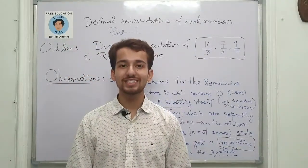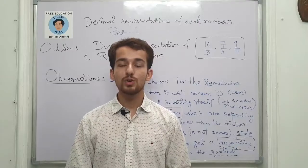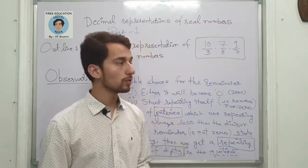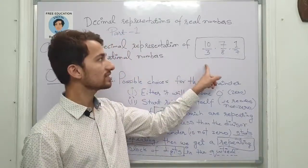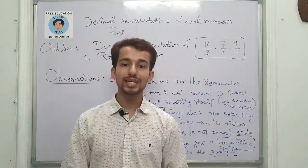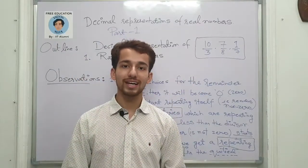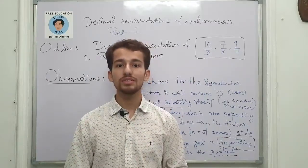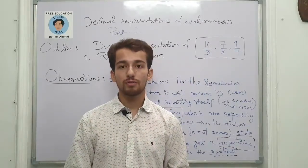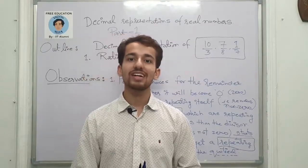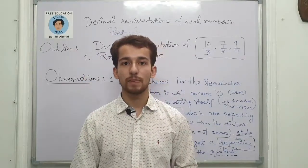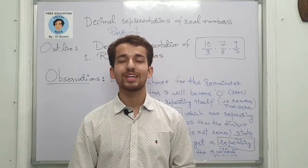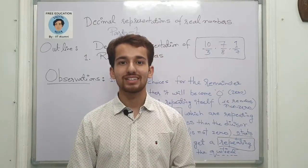This concludes the decimal representation of real numbers, part one. In the coming video, I will be discussing and elaborating more, dividing further in the two cases, and then moving ahead with the representation of irrational numbers. Do find relevant links in the description, like this video, share this initiative among your friends, and subscribe to the channel. Thank you so much.